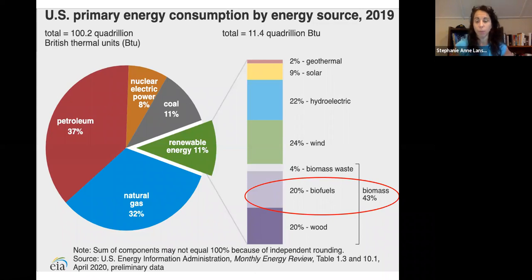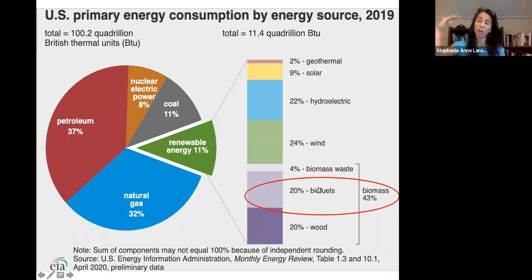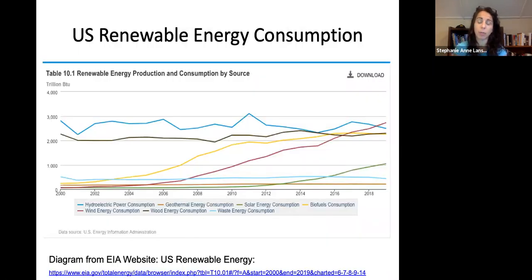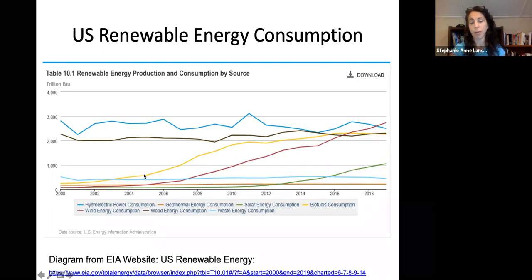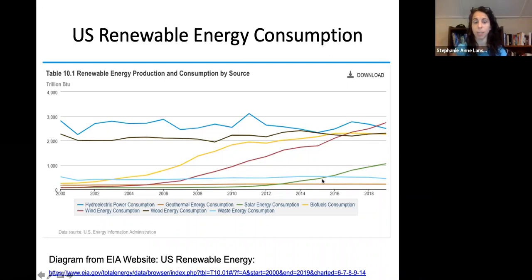When we look at all our energy production, biofuels represent that fuel part — 11% being renewable, and of that 11%, 20% is actually the biofuels part. We also have biomass waste, often used for digestion, and wood, often used in direct combustion for electricity or heat.